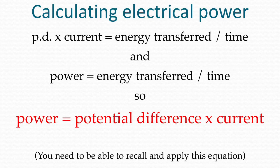So potential difference times current is equal to the energy transferred over time. We also know that power is energy transferred over time, so power must be equal to potential difference times current. This equation in red is an equation you must be able to remember, and you must be able to apply it as well under exam conditions.